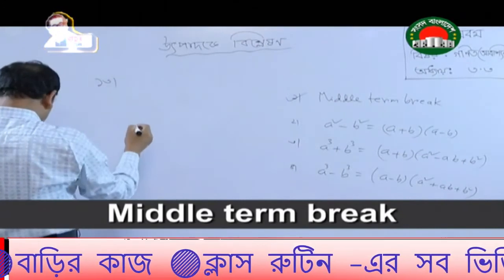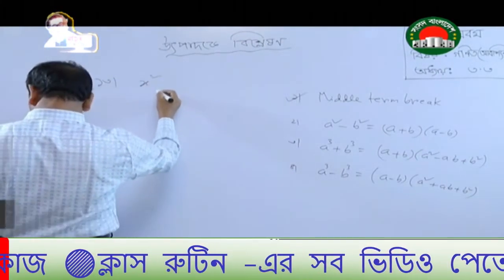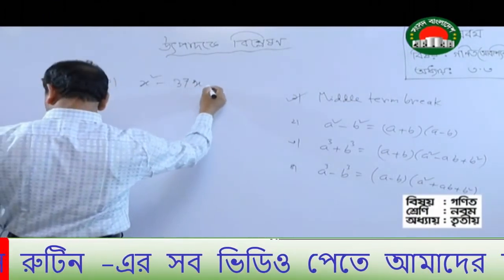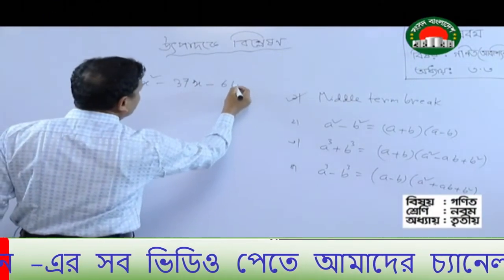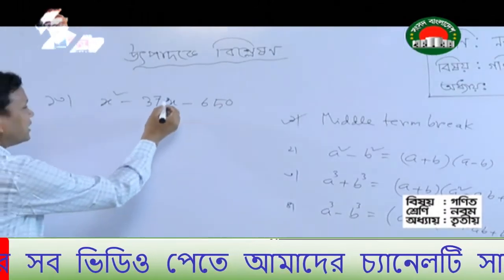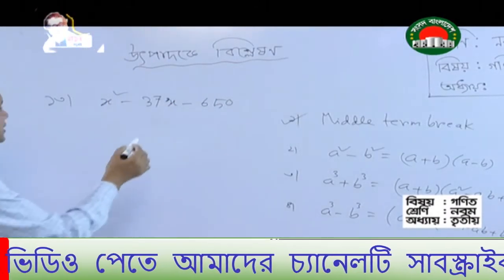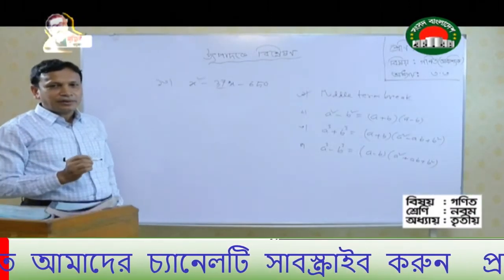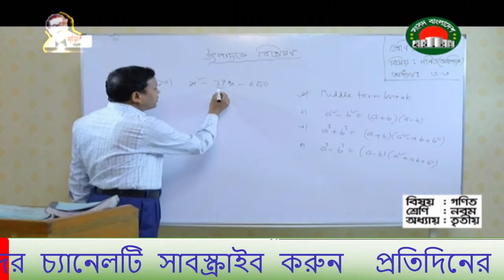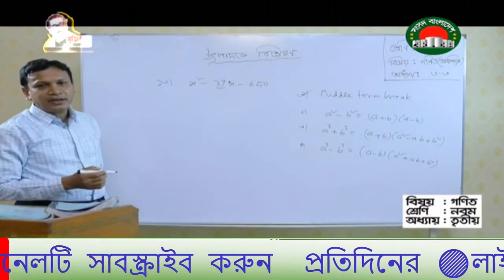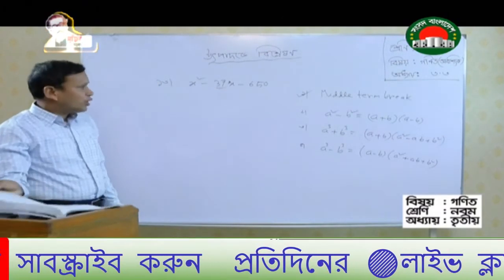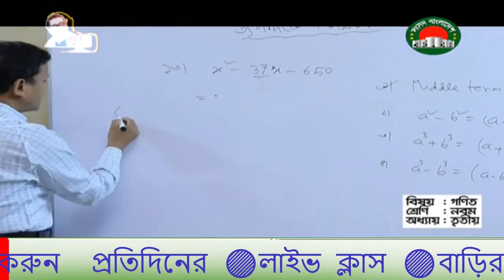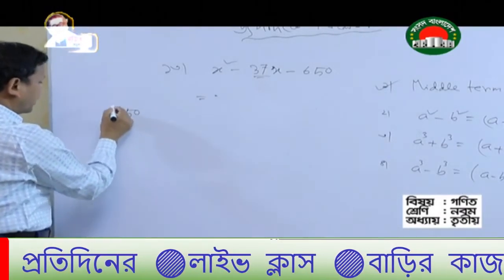Three numbers. x squared minus 36x minus 605. We know this 3rd. We want to find the factors, and the product (gung) is 65. The other factor (gung) is also 65. We will have to work with this product.